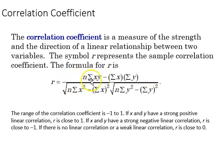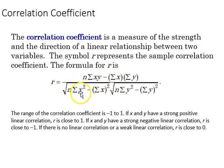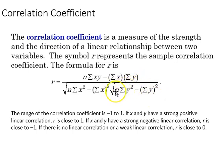In the numerator we have the sample size times the sum of the x-y product minus the individual sum of x times the individual sum of y. In the denominator we have the square root of n times the sum of x squared minus the sum of x squared, times the square root of the sum of y squared minus the sum of y squared, with the first case times the sample size.